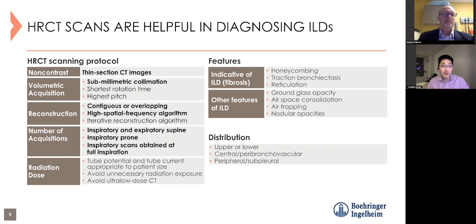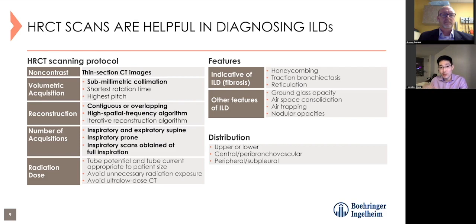Fourth, we do prone imaging in inspiration. When a patient lies on their back, the posterior aspects of the lungs can become a little atelectatic due to the weight of the lung tissue. To open those areas up and ensure there's no subtle fibrosis, we flip the patient onto their belly and rescan, usually through the lower thorax to save on radiation dose. Those are the four things that differentiate an HRCT from a regular chest CT.